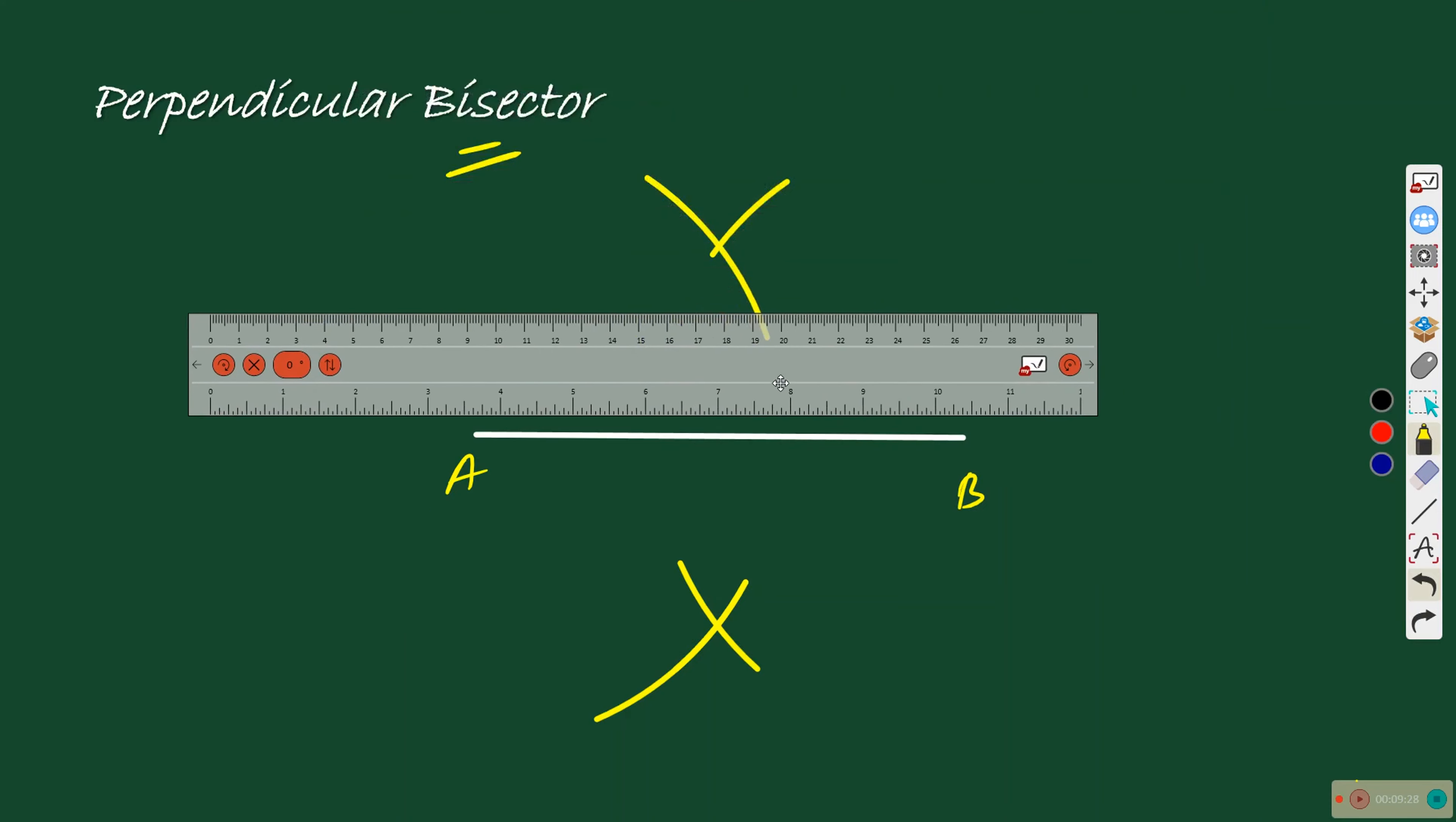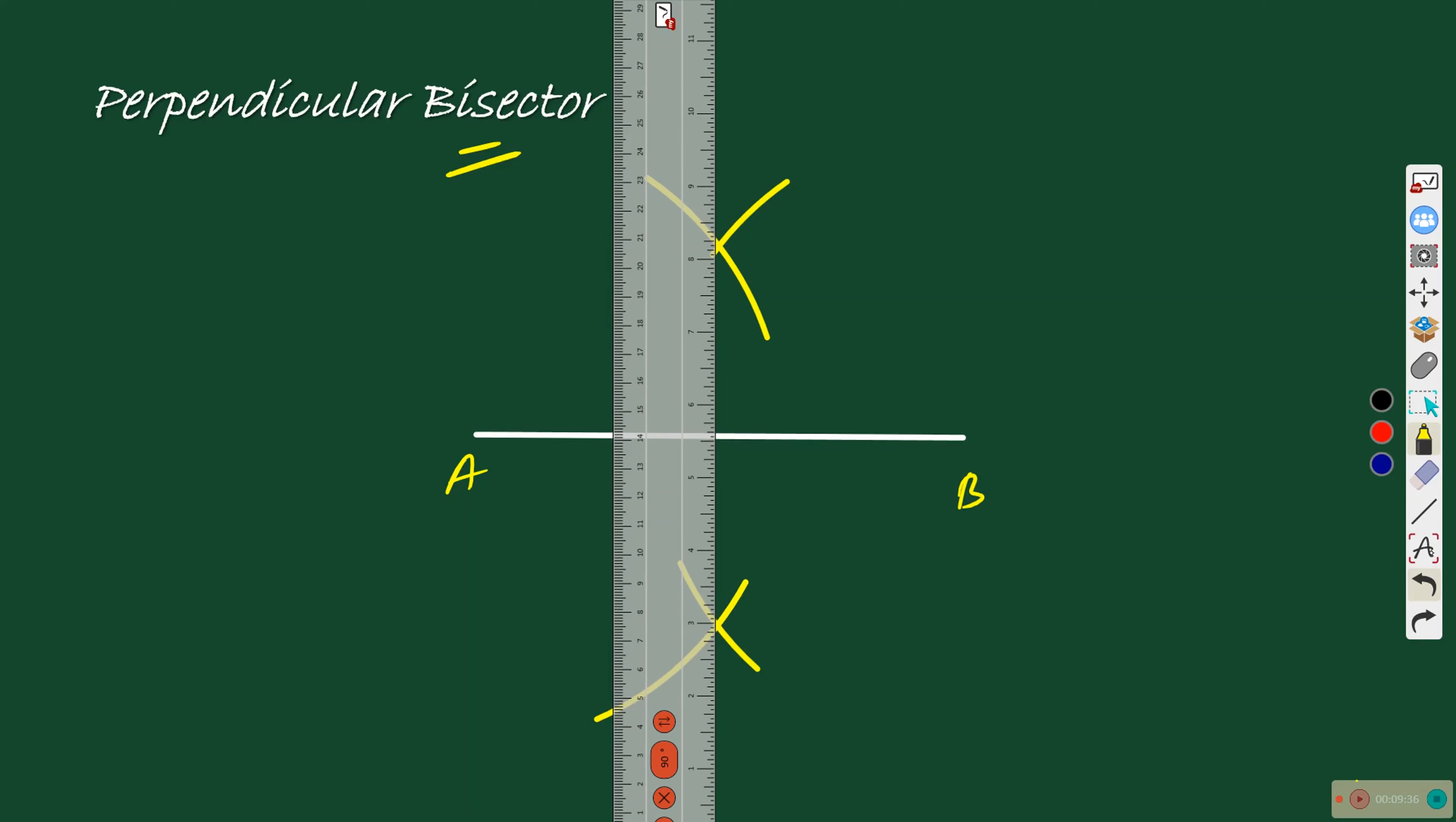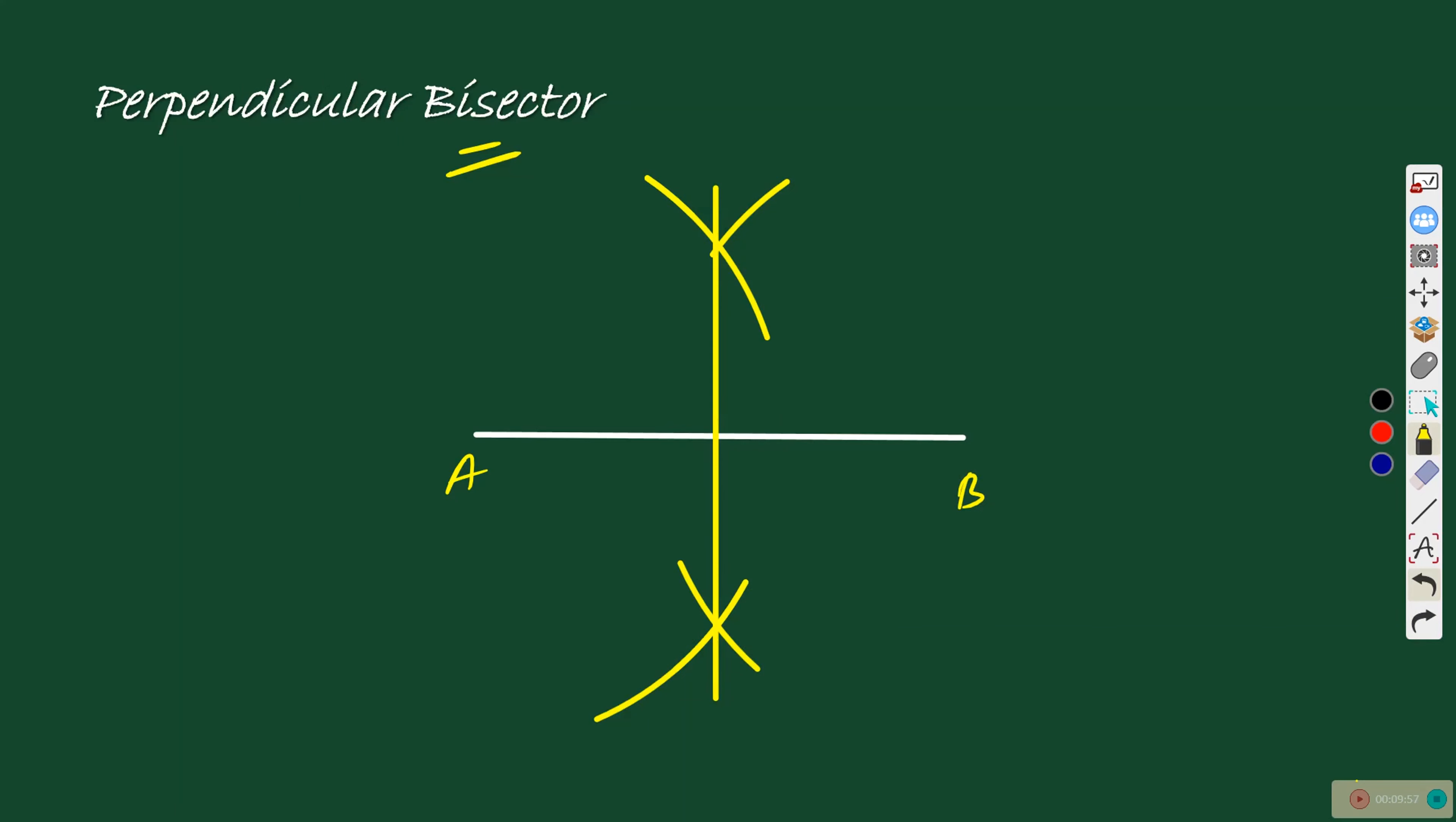Bring the scale. Draw the line through these two intersections. This line will be dividing the line segment where it is intersecting. The point of intersection will be bisecting the line, will be dividing the line into two equal parts.